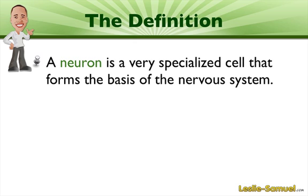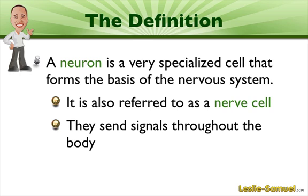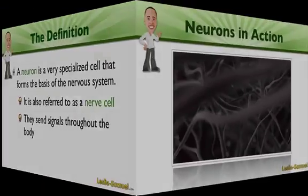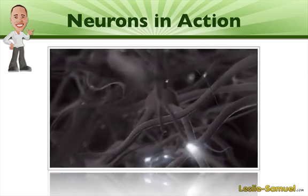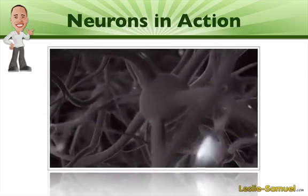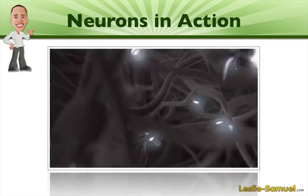Now that we have that situation in your mind, let's talk about the definition of a neuron. A neuron is a very specialized cell that forms the basis of the entire nervous system. It's also referred to as a nerve cell and these cells are specialized in that they send signals throughout the body and they can do that really rapidly. This animation gives you an idea of how these cells can send signals from one to another in a very rapid way, and actually it happens significantly faster than what's depicted here.